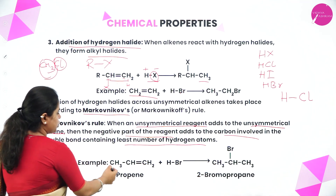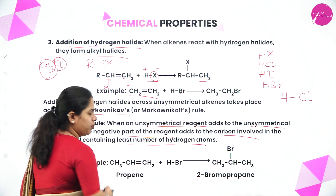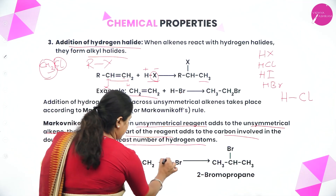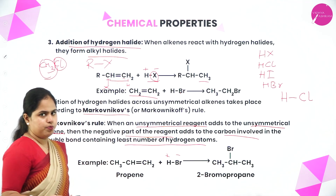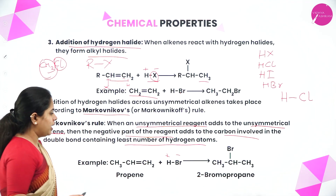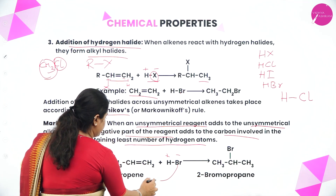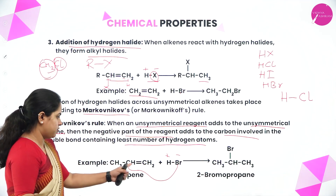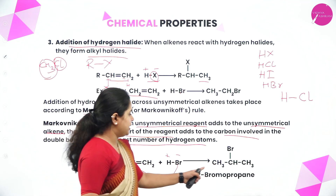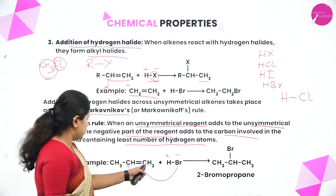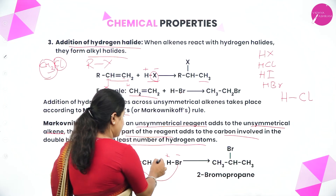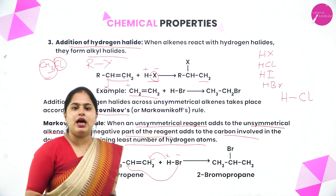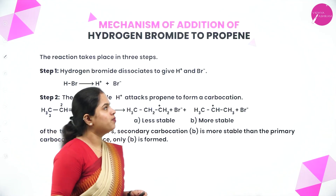One more example: propene CH3–CH=CH2 to which HBr is added. H is partial positive, Br is partial negative. The bromine will get attached to the carbon atom having fewer hydrogen atoms — which is this one — giving CH3–CHBr–CH3. The hydrogen gets attached to the CH2 carbon, making it CH3. So I hope the rule and the reaction are clear.